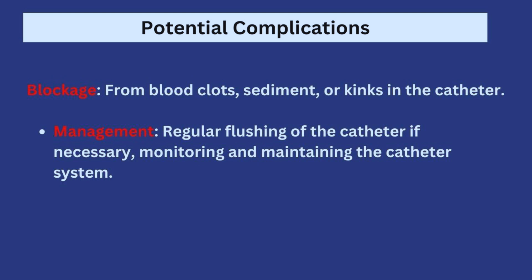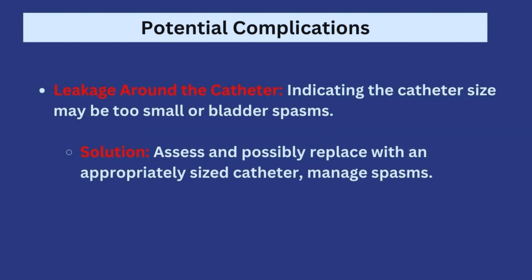Blockage is another complication — blood clots, sediments, or kinks in the catheter can cause it to block. Management involves regularly flushing the catheter if necessary and monitoring the tubing for sediments or kinks. Leakage around the catheter may occur if the catheter size is too small or due to bladder spasms. This is particularly problematic for incontinent patients whose skin you are trying to protect from moisture and breakdown. The solution is to assess the catheter, ensure the correct size is being used, and replace it with the appropriate one if needed.